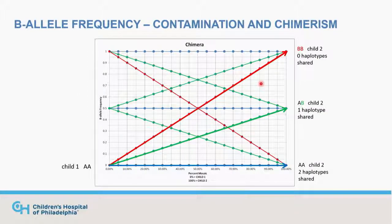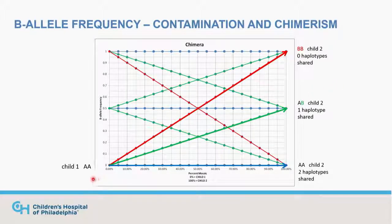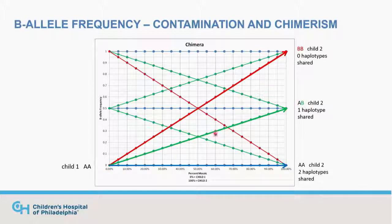When we talk about chimerism, we're mixing two people together. One individual's B-allele frequencies are at 0, 0.5, and 1 on one side, and a second individual's are on the other side. Based on the SNPs, we either have the same genotype in both persons (AA/AA — blue lines), one shared haplotype (AA/AB — green lines), or the most informative genotypes, in red, where one child is homozygous AA and the other is homozygous BB.